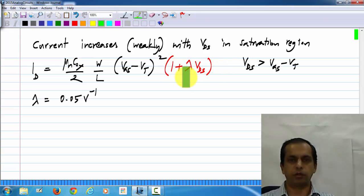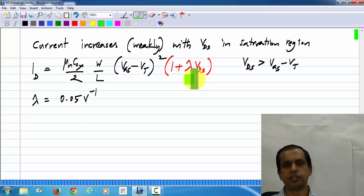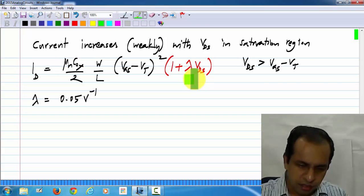Now, it also depends on the technology itself. We would not go into those details. As far as we are concerned, lambda is an additional model parameter for the MOS transistor. And this correction factor appears only in the saturation region, because the physical phenomenon by which this current increases is known as channel length modulation, and that happens only in saturation region.